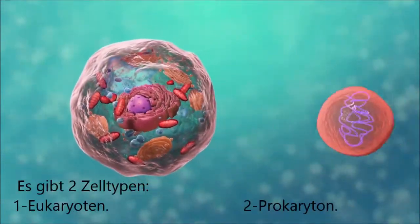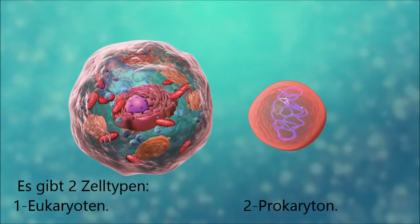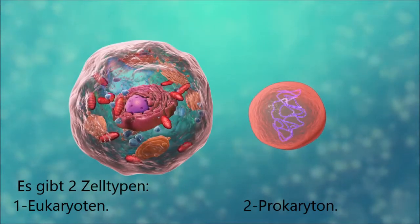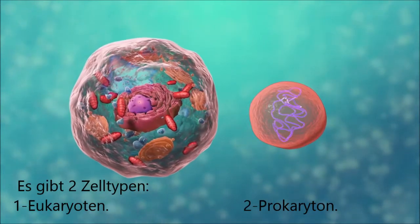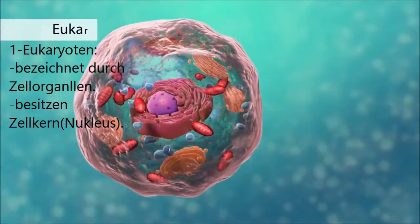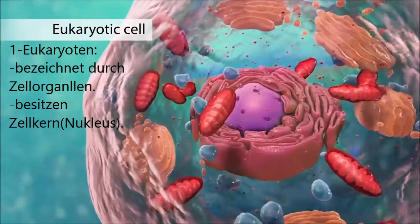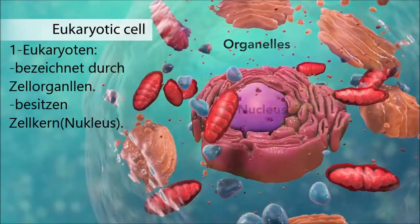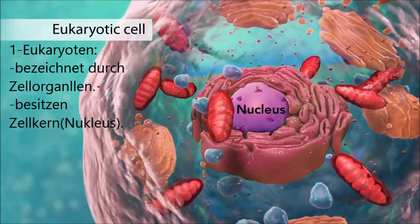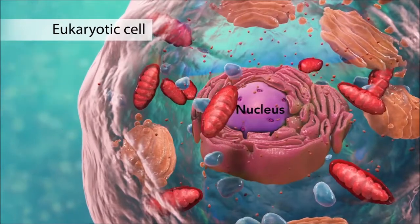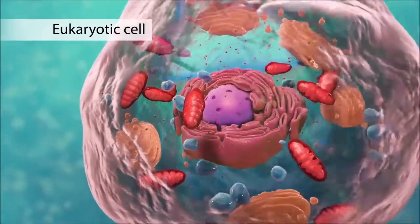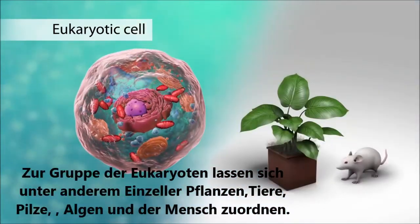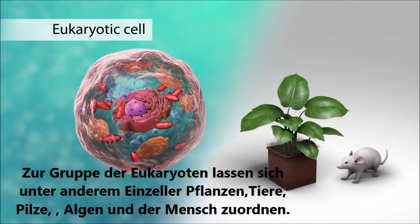There are two broad categories of cells. The first category is eukaryotic cells. They have organelles, which include the nucleus and other special parts. Eukaryotic cells are more advanced, complex cells, such as those found in plants and animals.